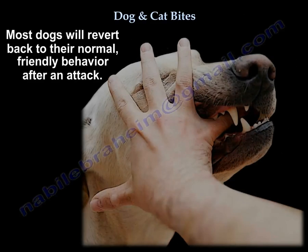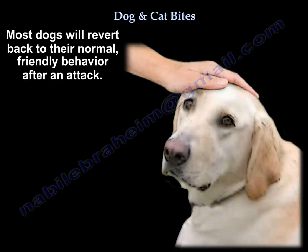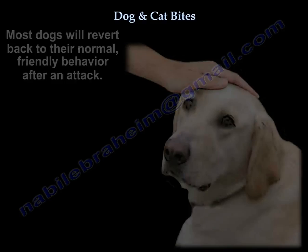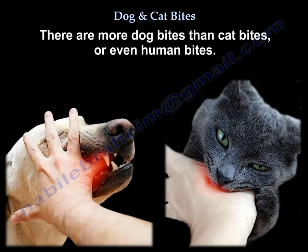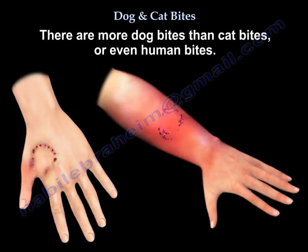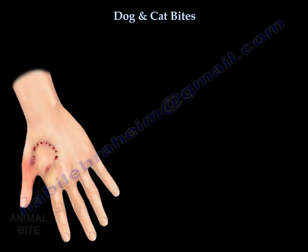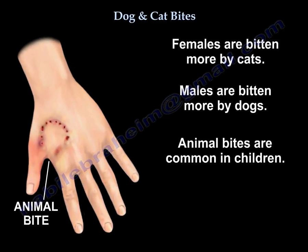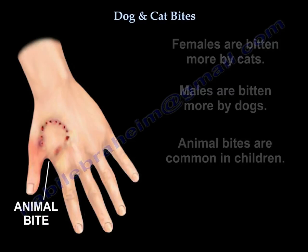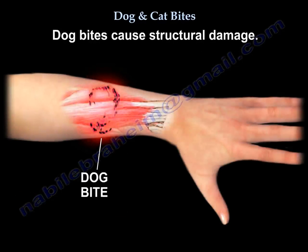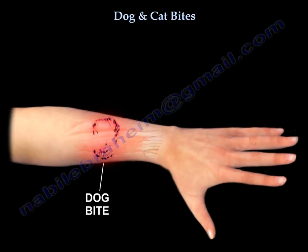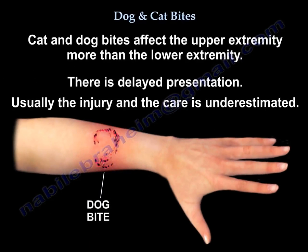There are more dog bites than cat bites than human bites. Females are bitten more by cats; males are bitten more by dogs. Animal bites are common in children. Dog bites cause structural damage, and cat and dog bites affect the upper extremity more than the lower extremity. There is often delayed presentation and the injury and care are underestimated.